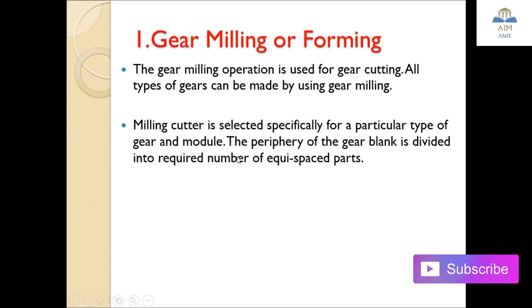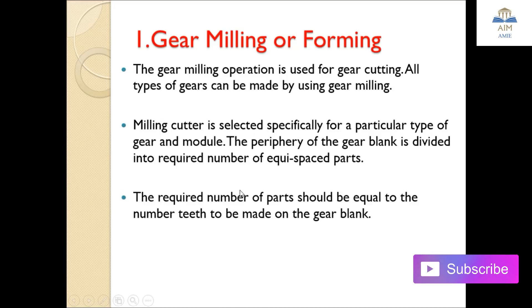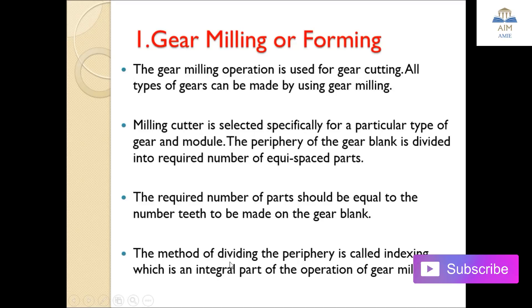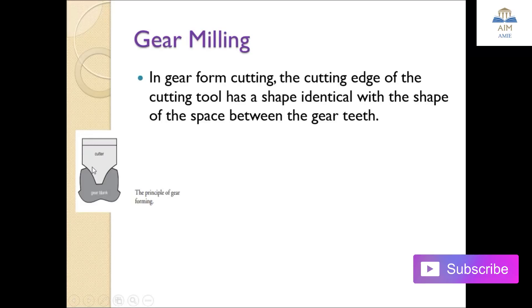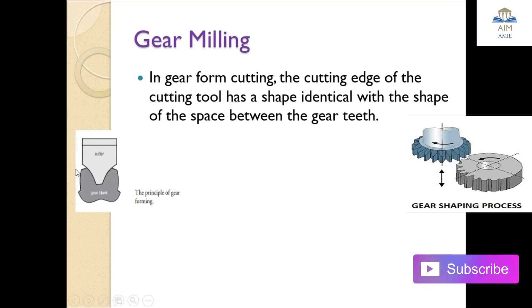A milling cutter is selected specifically for a particular type of gear or module. The periphery of the gear blank is divided into the required number of equally spaced parts, which should equal the number of teeth to be made on the gear blank. This method of dividing the periphery is called indexing, which is an integral part of the gear milling operation. In gear form cutting, the cutting edge of the cutting tool has a shape identical to the space between the gear teeth.